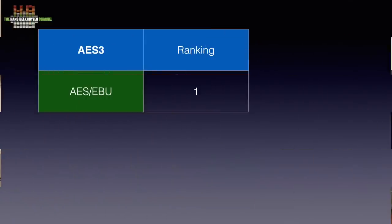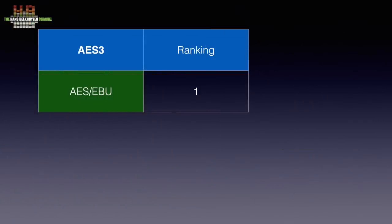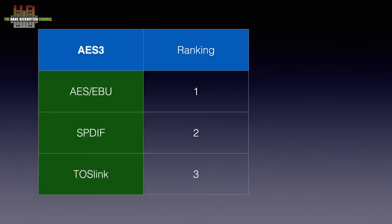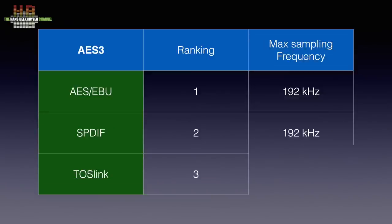Some DACs offer the possibility to switch between wide chasing and close chasing. The first position is for jittery sources, the second for low jitter signals. If you need to use one of the AES 3 connections, AES-EBU, if present on both devices, is the best. SPDIF is second and TOSlink last. AES-EBU and SPDIF can carry signals up to 192 kHz. TOSlink officially is supported up to 96 kHz, although some manufacturers support 192 kHz.